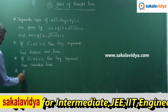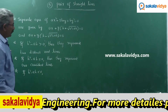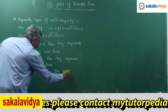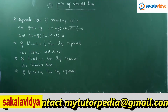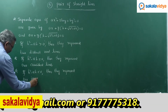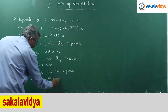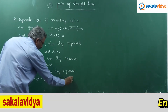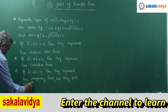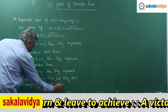If h² - Ab < 0, then they represent two imaginary lines — not real — but they pass through a real point, that is the origin.